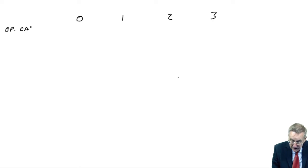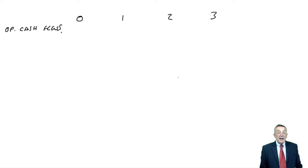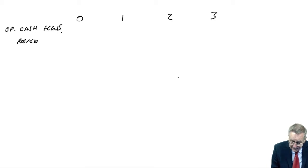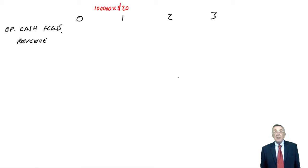As before, we'll start off with the operating cash flows. And this time, they haven't told us the net operating cash flow. They haven't given it to us, but they have told us the information about the revenue and the costs. So we can do it ourselves. So let's do the revenue first of all.